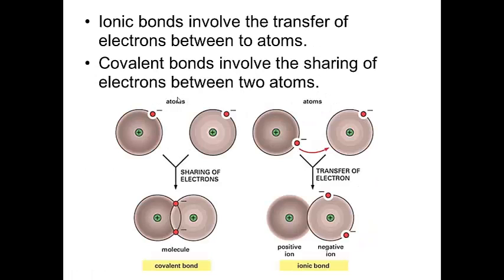So ionic bonds involve a transfer of electrons between atoms. So you can see over here we have an ionic bond that is showing. So this atom here has this electron, and it's going to actually give it to this atom. And then that makes them bonded together.